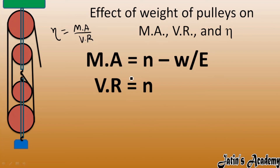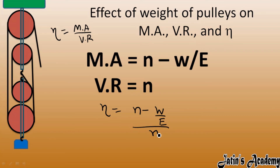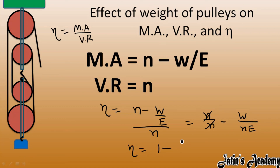Now we calculate efficiency: efficiency = mechanical advantage / velocity ratio. Substituting, efficiency = (n - W/E) / n. Dividing separately, efficiency = 1 - W/(n·E), where W is the weight of the movable pulleys, n is the number of pulleys, and E is the effort applied.